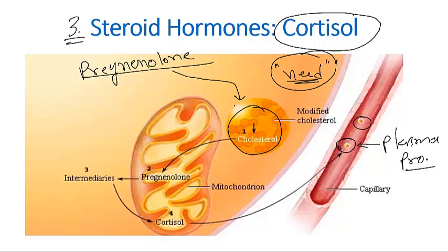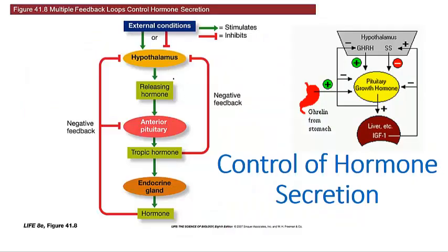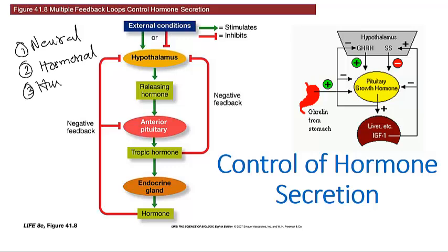Now let's look at the control of hormone secretion. There are three major types. The first is neural control — for example, the adrenal medulla is stimulated by the sympathetic nervous system, and epinephrine and norepinephrine reinforce the actions of the sympathetic nervous system.